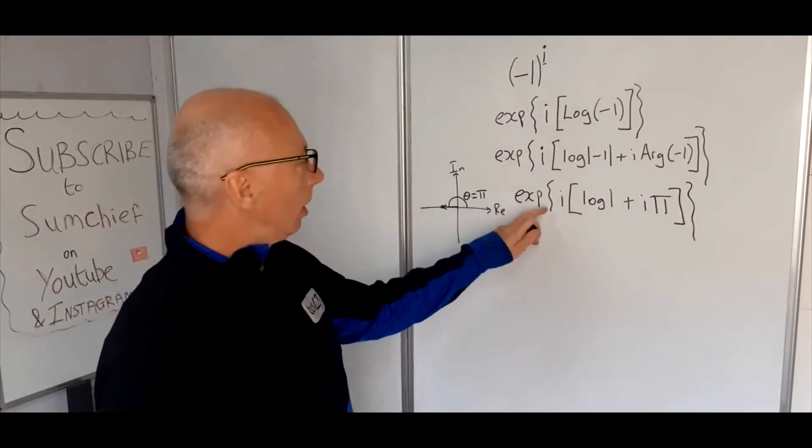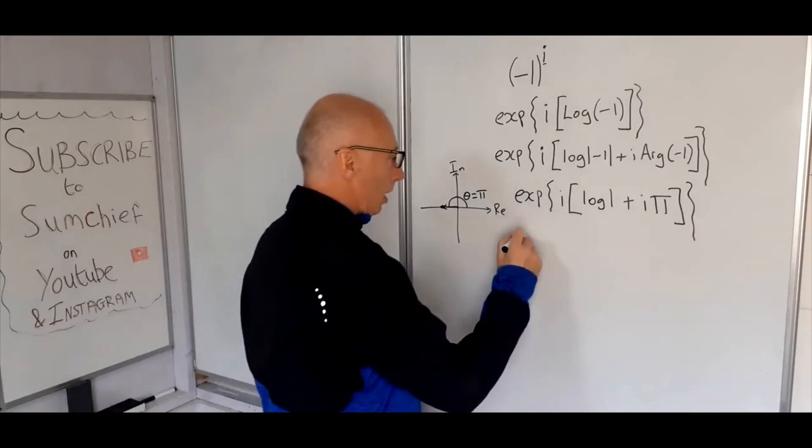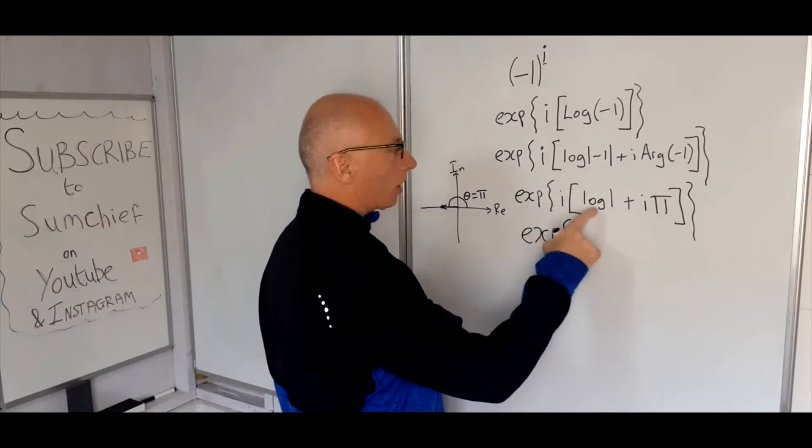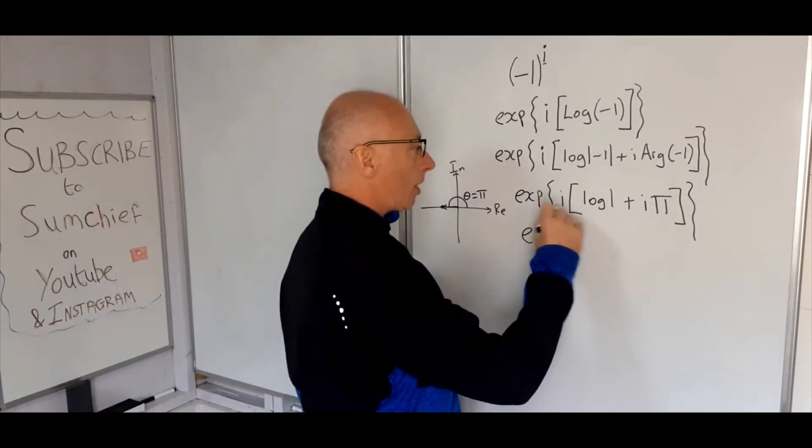Okay, now it's just algebra, just distribute the i amongst all these things here and we end up with exponential i times log of one. Well, log of one is just zero, so this one cancels out, so that's gone.